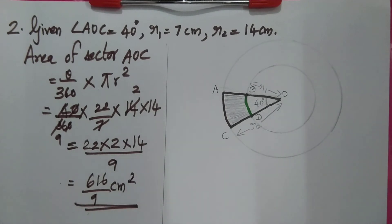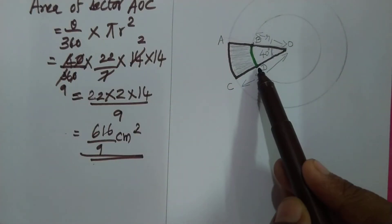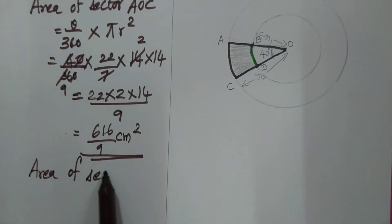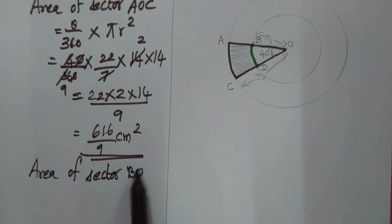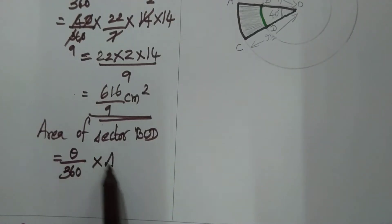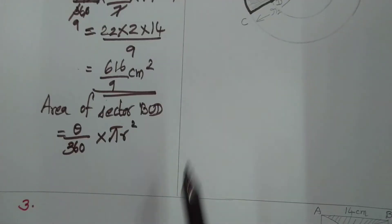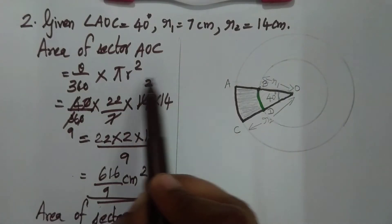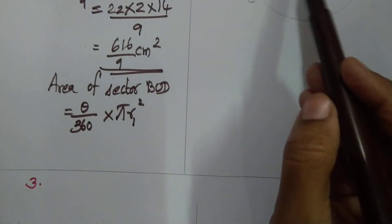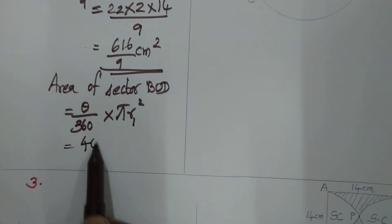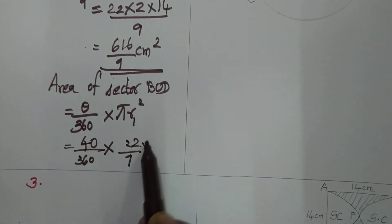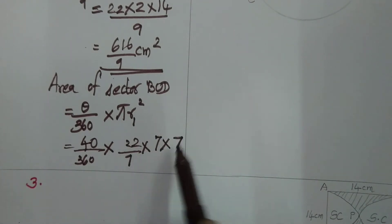Now for the small sector BOD. Area of sector BOD equals theta by 360 into pi r squared. Only the radius changes here. AOC used R2 squared, so BOD uses R1 squared. The radius is 7 cm, so we calculate 40 by 360 into 22 by 7 into 7 into 7.